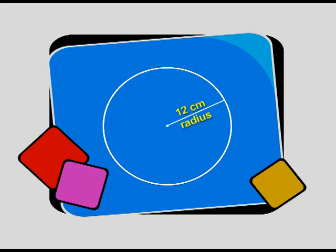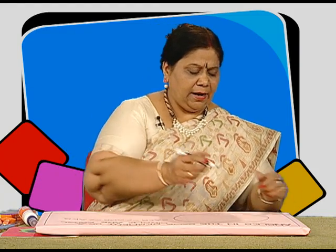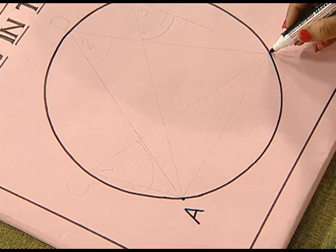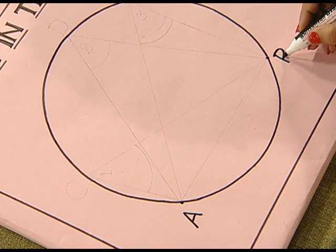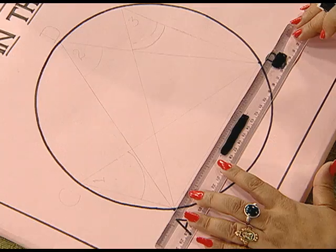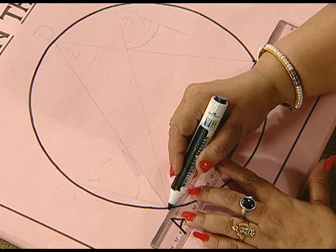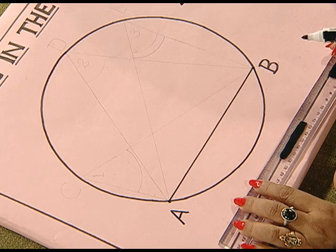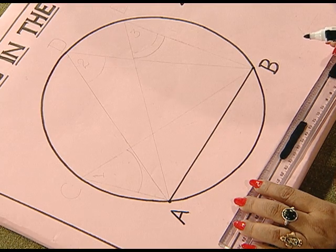Now to begin with, we take a circle of convenient radius — say 12 centimeters, as we have taken here. Now we mark two points on the circle, namely A and B. Let this be point A and this is point B. With the help of a ruler, we join these points. What do you observe? Yes, we get a chord AB, which divides the circle into two segments.